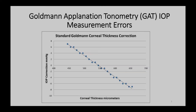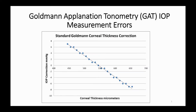It has been demonstrated even by Goldman himself 60 years ago that several IOP measurement errors are present. Those errors include corneal biomechanical errors of central corneal thickness, corneal rigidity, and corneal curvature.